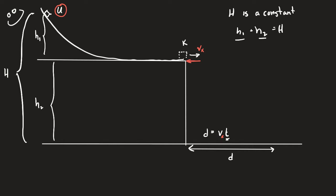Question B asks to derive an equation for D in terms of H1, H2, M, and physical constants. That full derivation probably won't be on the exam — they'll more likely give you an equation and ask you to evaluate it. But it's worth doing. The distance D is related to how long the block is in the air and its horizontal velocity. The time in the air is given by the square root of 2H2 over G.